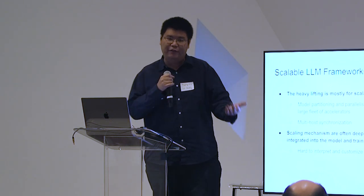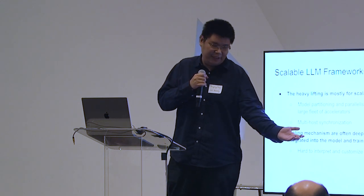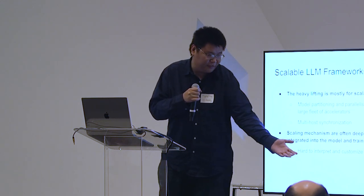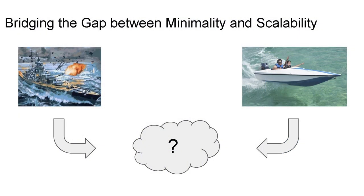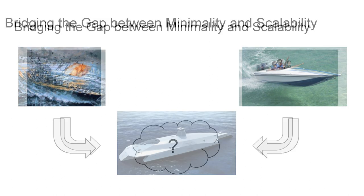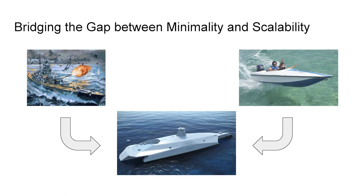This deep integration makes it very difficult to customize. For example, if you want to build your own language model and take an existing complicated implementation, it's very hard to do. I was wondering: can we actually bridge the gap between the minimal and the scalable language model frameworks? And I believe with today's machine learning frameworks, we actually can. My analogy is a futuristic battleship that's very powerful but automatically controlled — it doesn't need much input from the user to do the very scalable heavy lifting.